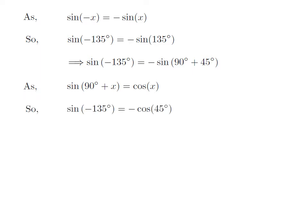Let us apply the above identity for sine of 90 degrees plus 45 degrees. Here, x is 45 degrees. So, sine of minus 135 degrees is equal to minus cosine of 45 degrees.